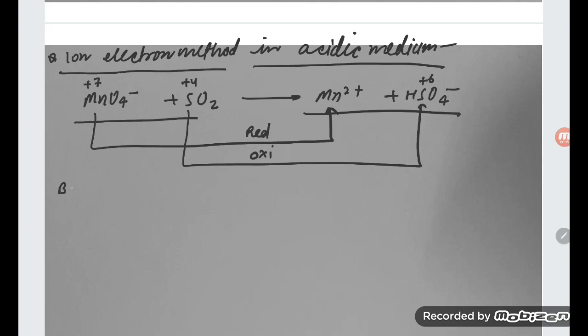If you are talking about balancing, iron electron method means splitting into two half equations. So MnO4 minus is converting into Mn2+. Mn is already balanced to balance the oxygen. Here 4 is there, here 0 is there. So we will do here 4H2O.